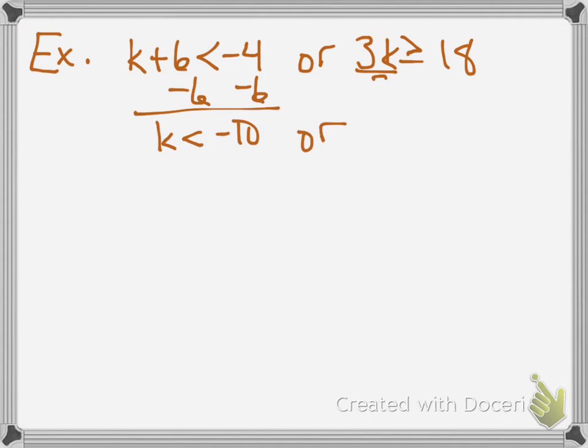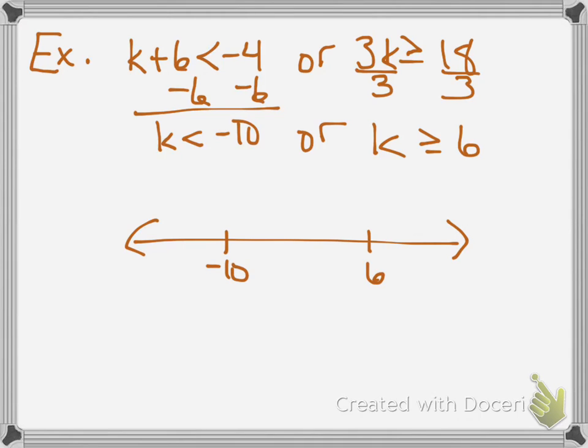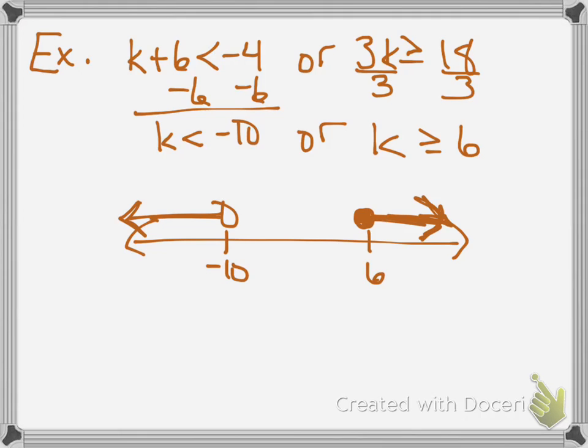This one, you have like two separate problems, but you graph them on the same number line. Notice here, I'm going to subtract on one, and divide on the other. Pay attention to the way the arrows are going. Less than -10 means open dot, go to the left. Greater than or equal to 6 means close dot, go to the right. That would be my graph.